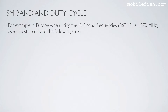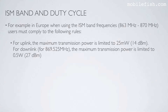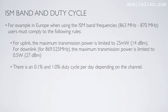For example, in Europe, when using the ISM band frequencies 863 MHz to 870 MHz, users must comply to the following rules. For uplink, the maximum transmission power is limited to 25 mW or 14 dBm. For downlink, for 869.525 MHz, the maximum transmission power is limited to half a watt or 27 dBm. There is a 0.1% and 1% duty cycle per day depending on the channel, and the maximum allowed antenna gain is 2.15 dBi.